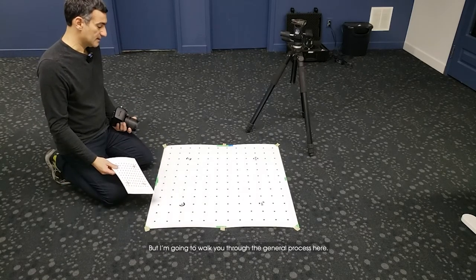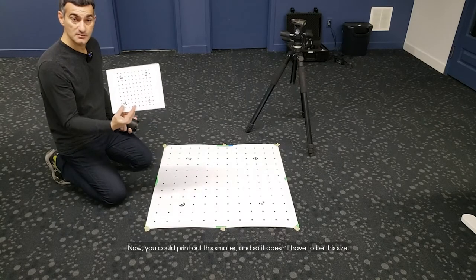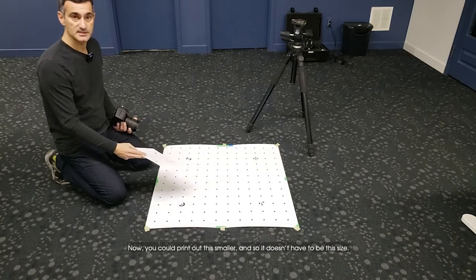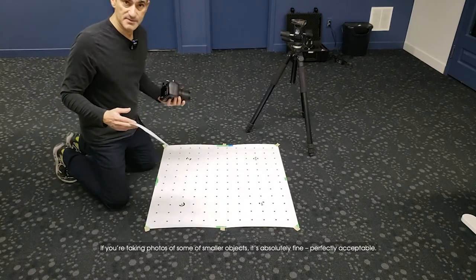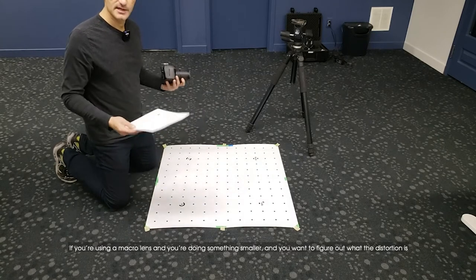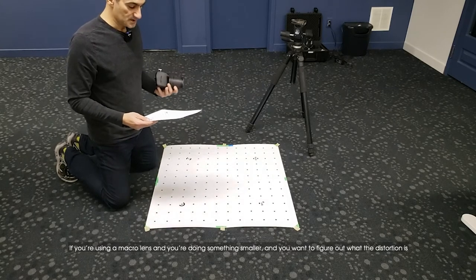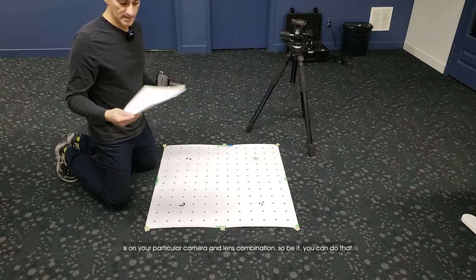I'm going to walk you through the general process here. You could print this out smaller, it doesn't have to be this size. If you're taking photos of smaller objects it's absolutely fine, perfectly acceptable. If you're using a macro lens and doing something smaller and you want to figure out the distortion on your particular camera and lens combination, you can do that.